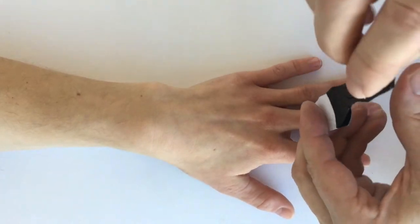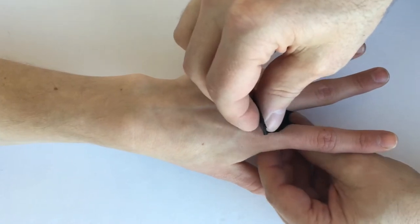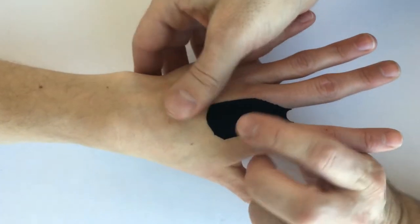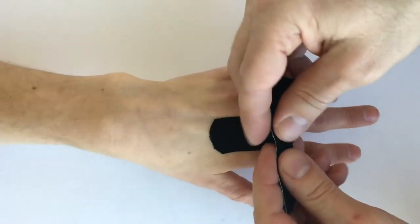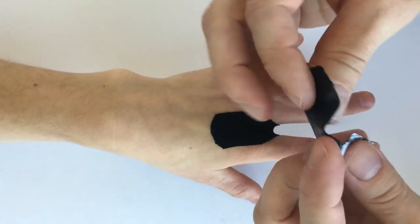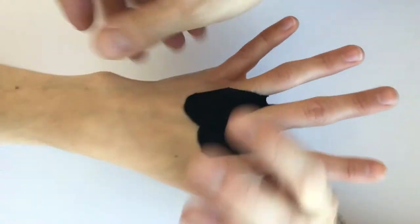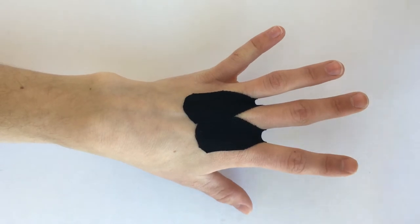I put this kinesio tape on for this technique with just a little bit of stretch. Not a lot of stretch, but just a little bit of stretch, maybe 10% tension, something like that. And just put one in each of the web spaces.